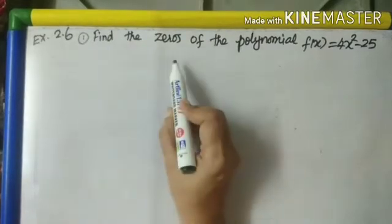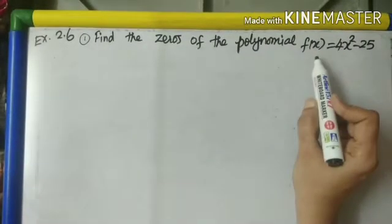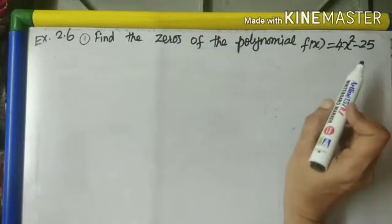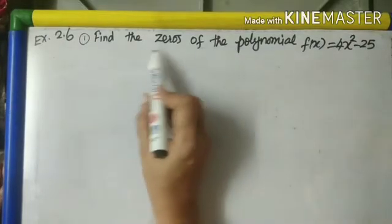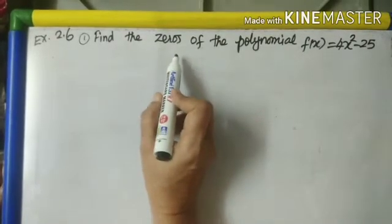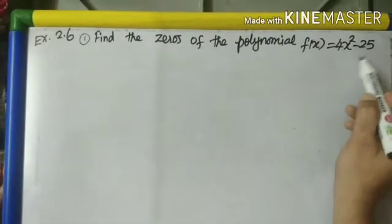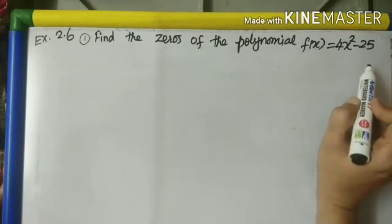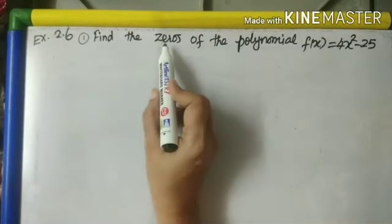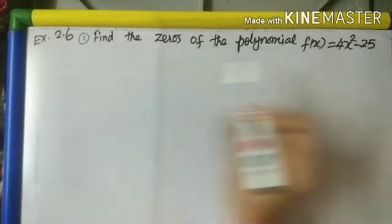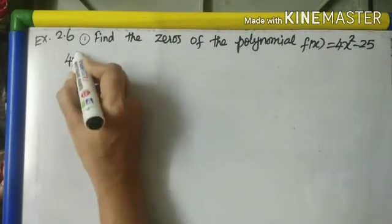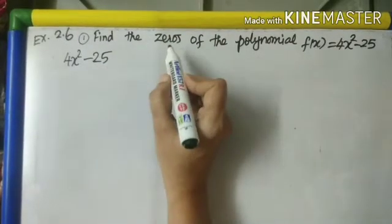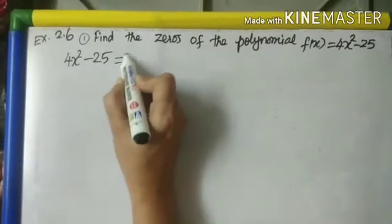First question: find the zeros of the polynomial f(x) = 4x² - 25. What do you mean by zeros? Put this polynomial equal to 0 and solve it. Whatever answer we get, we call as zeros. So f(x) is 4x² - 25. To find the zeros, make it equal to 0.